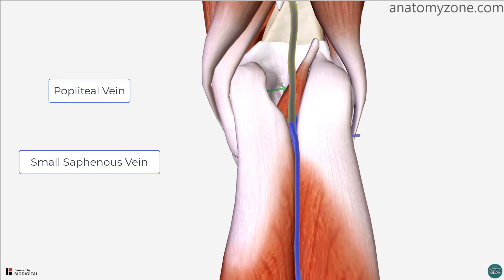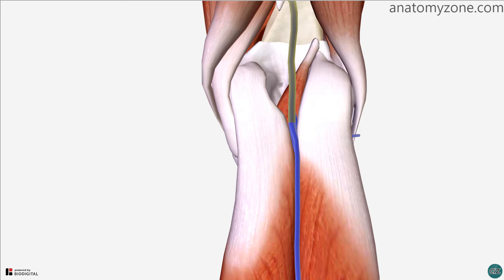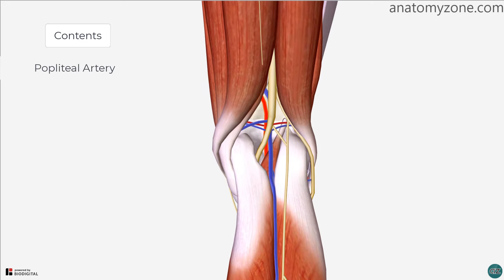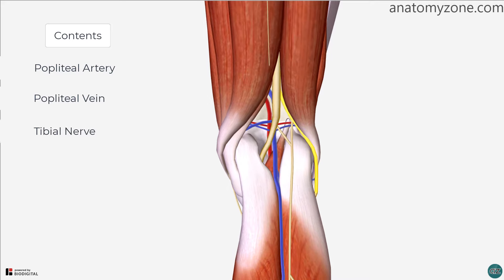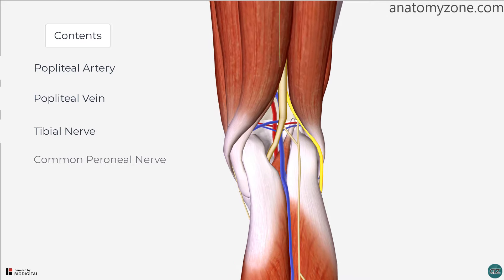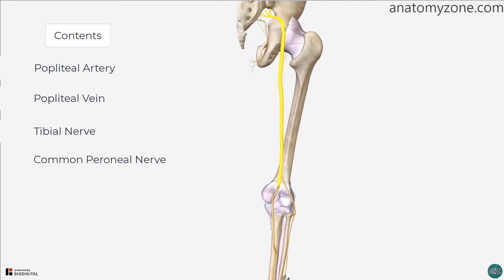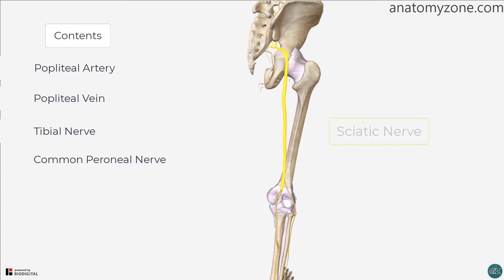Now let's take a look at some of the contents of the popliteal fossa. It contains four main structures: the popliteal artery, the popliteal vein, the tibial nerve and the common peroneal nerve. The tibial nerve and the common peroneal nerve are branches of the sciatic nerve.